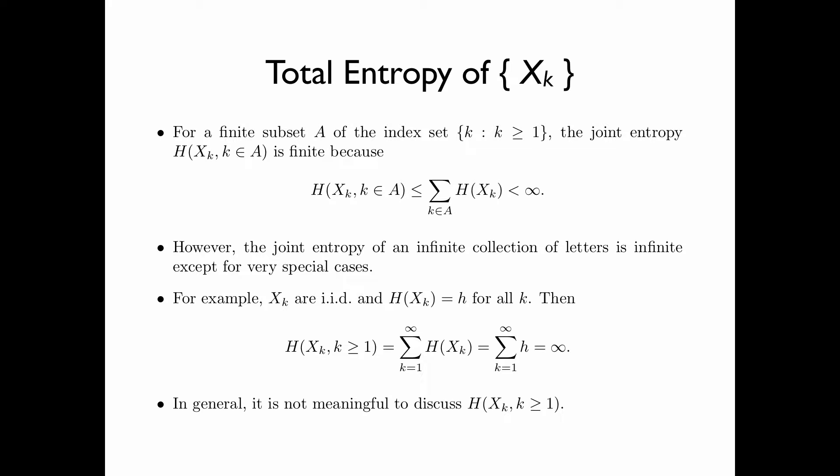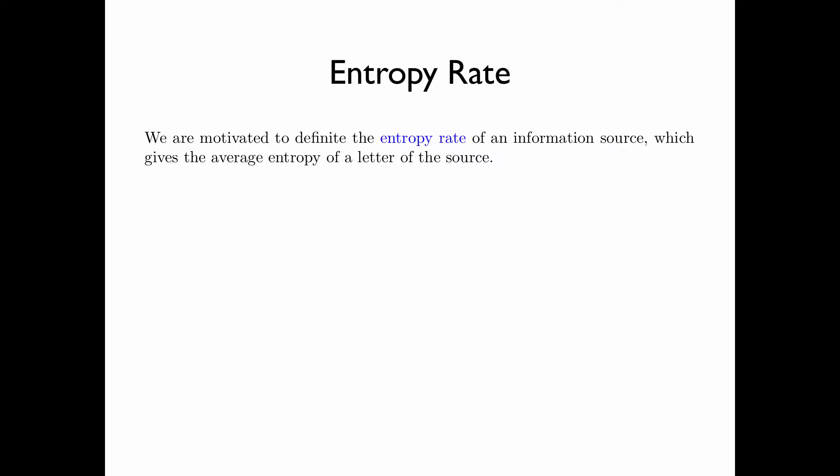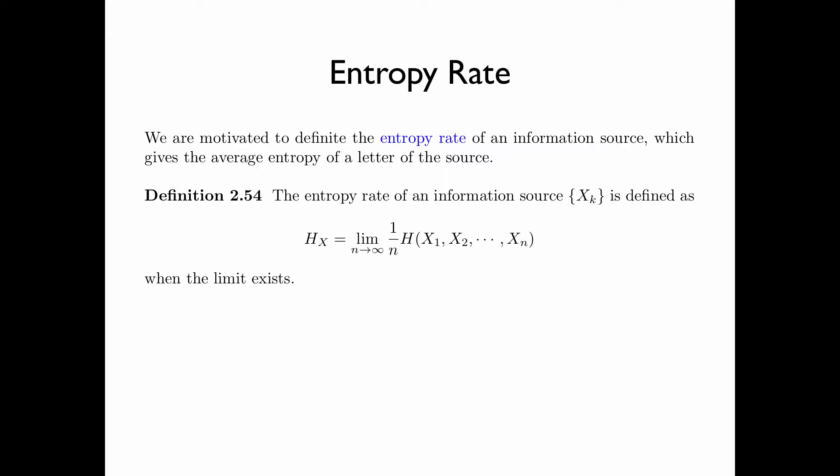Therefore, in general, it is not meaningful to discuss the joint entropy of an information process. We are now motivated to define the entropy rate of an information source, which gives the average entropy of a letter of the source. The entropy rate of an information source x sub k is defined as H sub x equals the limit as n goes to infinity of 1 over n times the joint entropy of x1, x2, up to xn, when the limit exists.